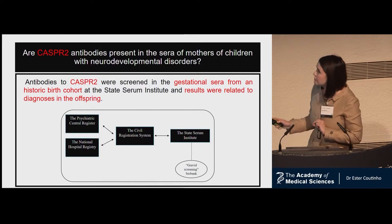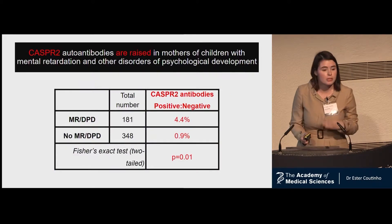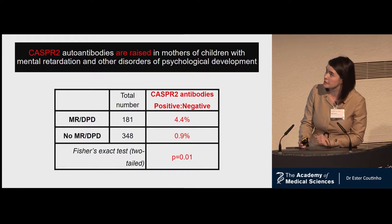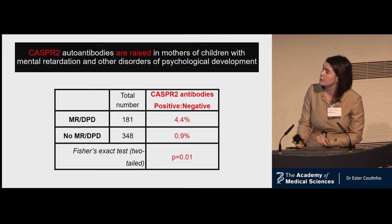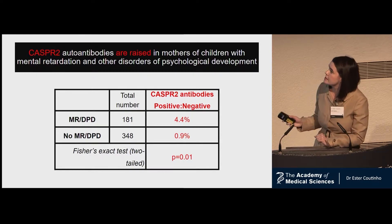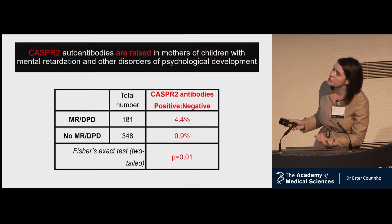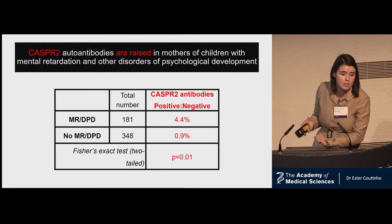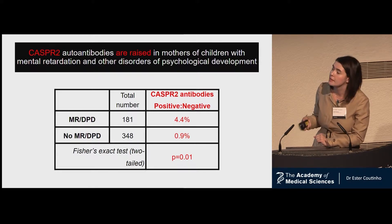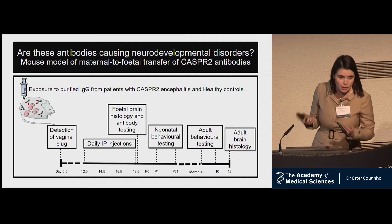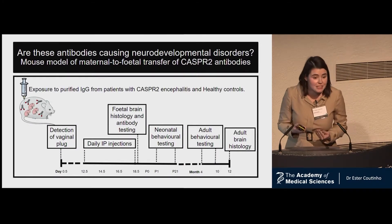What we found was that CASPR2 antibodies were present in mothers of children with neurodevelopmental disorders. Looking at the table, CASPR2 antibodies were nearly five times more frequent in mothers of children with mental retardation and disorders of psychological development than in control mothers. So these antibodies are there — but are they causing the disease?